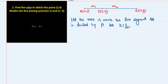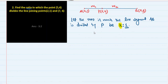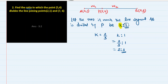You might wonder: how can we take the ratio as K:1, since the second component may not be 1? The key is that K does not have to be an integer — K can be a fraction. For example, if K = 2/3, then K:1 = 2/3:1 = 2:3. So the ratio does not stay fixed with 1 as the second component; K adjusts to give the correct ratio.